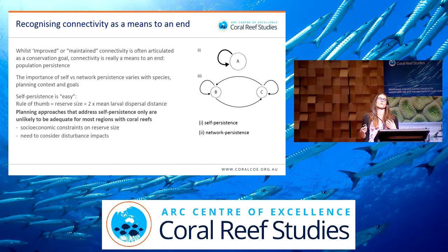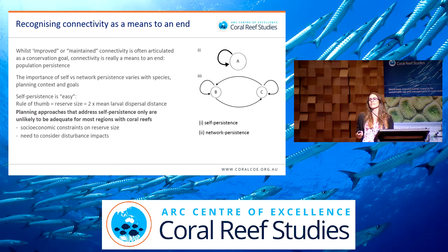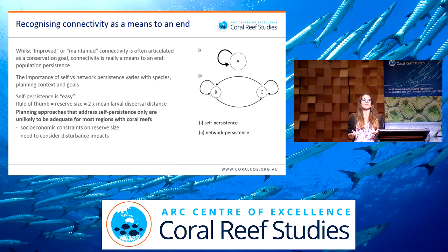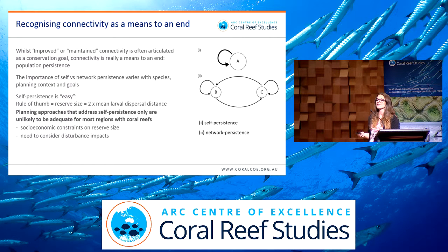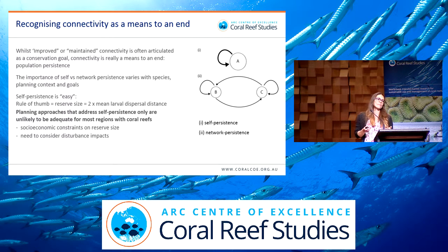But there are a couple of problems with that. First, if a site is self-persistent but impacted by a disturbance event, it's unclear whether sufficient larvae will arrive from other sources to allow the population to recover. Secondly, in many parts of the world — certainly in the Pacific Islands and the Coral Triangle — it's not possible to establish reserves that large, as for most coral reef fish species that would mean reserves 20 to 30 kilometres across. What's great about network persistence is that we might be able to design reserve networks that improve the likelihood that populations persist without needing really large fishery closures. From a conservation perspective, we're not thinking about maximizing connectivity — we need to think about maximizing persistence.